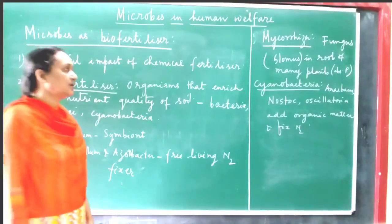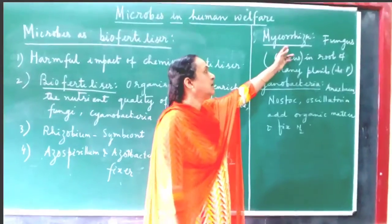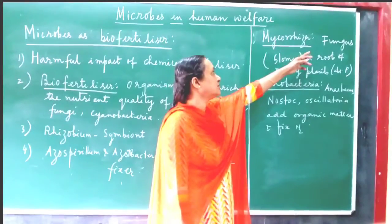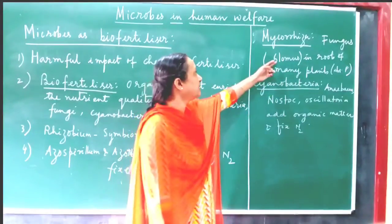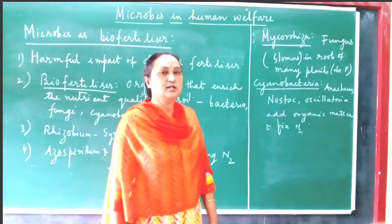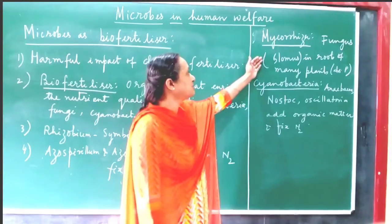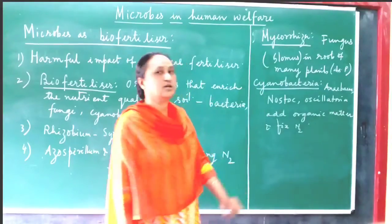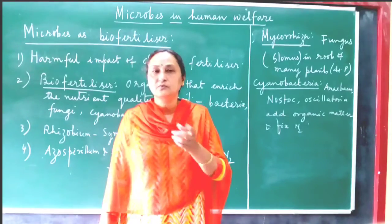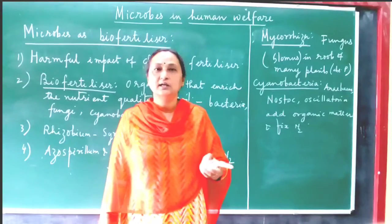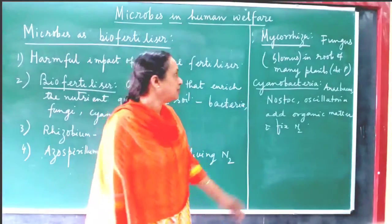Another example is mycorrhizae. Mycorrhizae is also an association between a fungus and the roots of many plants. The genus is called Glomus. In this mycorrhizal association, both organisms are benefited. The fungus absorbs phosphorus from the soil and provides it to the plant, and the plant provides food and a medium for the fungus to survive.